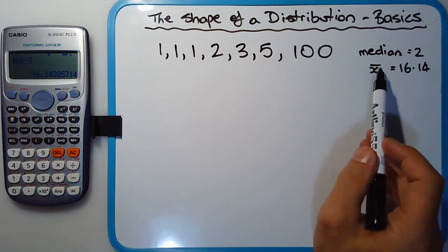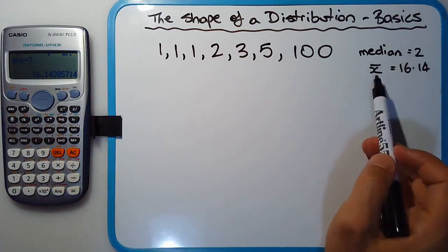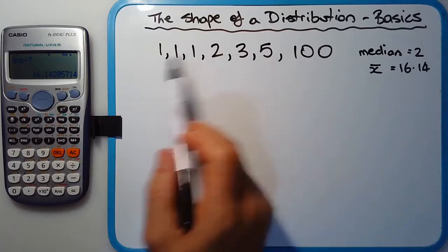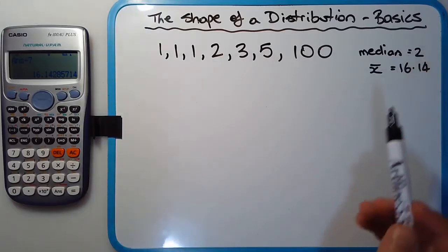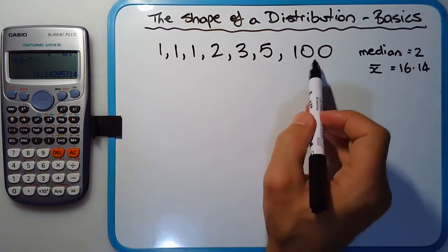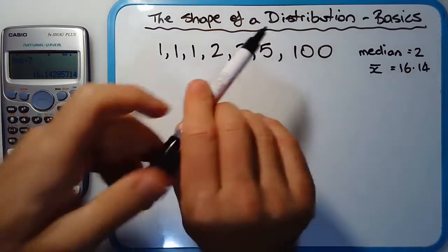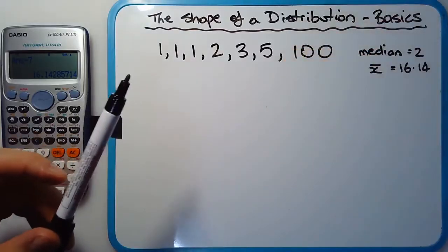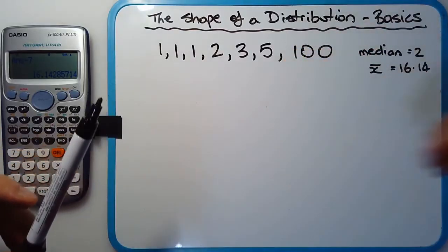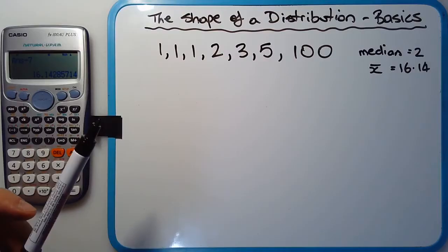So what's happened here: the median is 2 — that's the middle score — yet the mean of these seven numbers is many times higher. That's clearly the effect of this outlier. What this outlier has done is it's effectively pulled the mean to the positive side, or to the right-hand side.